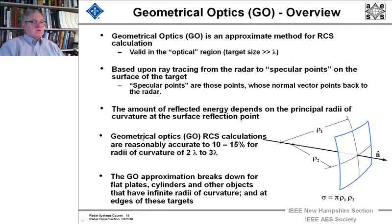Geometrical optics calculations are reasonably accurate to 10 or 15 percent for radii of curvature of 2 lambda to 3 lambda. And it breaks down with flat plates, as I said, with cylinders which would have one dimension where we would have an infinite radius of curvature, and other objects similar, and also at the edges of targets like flat plates.